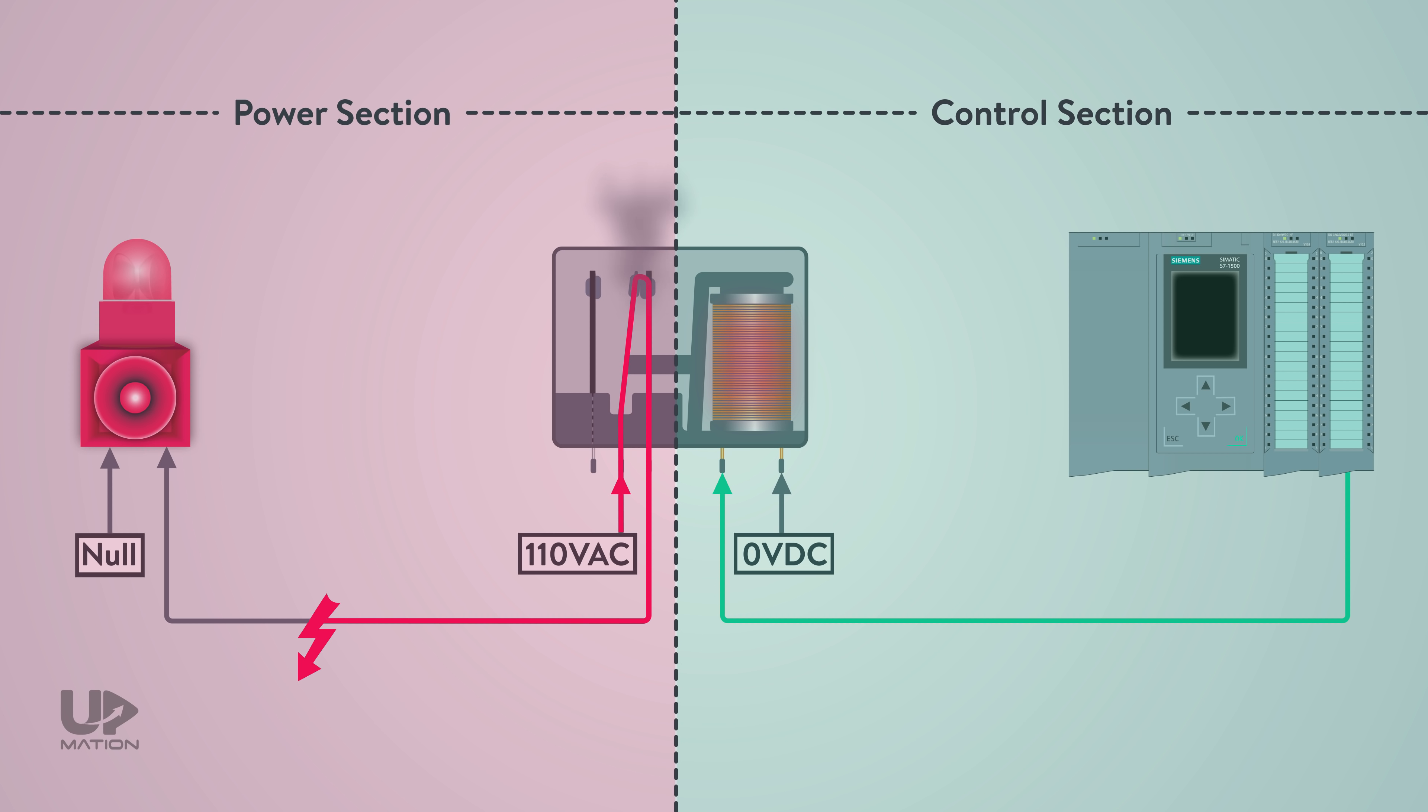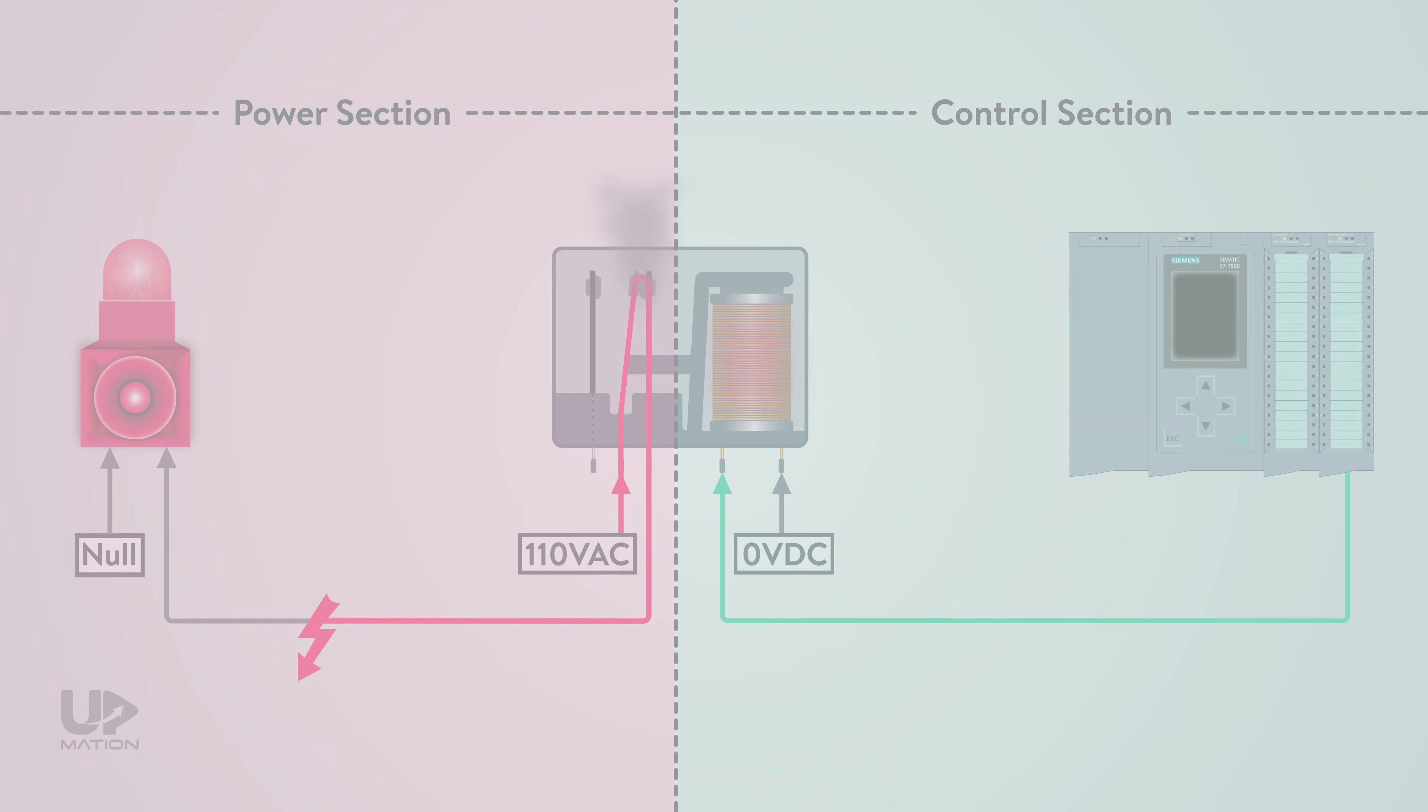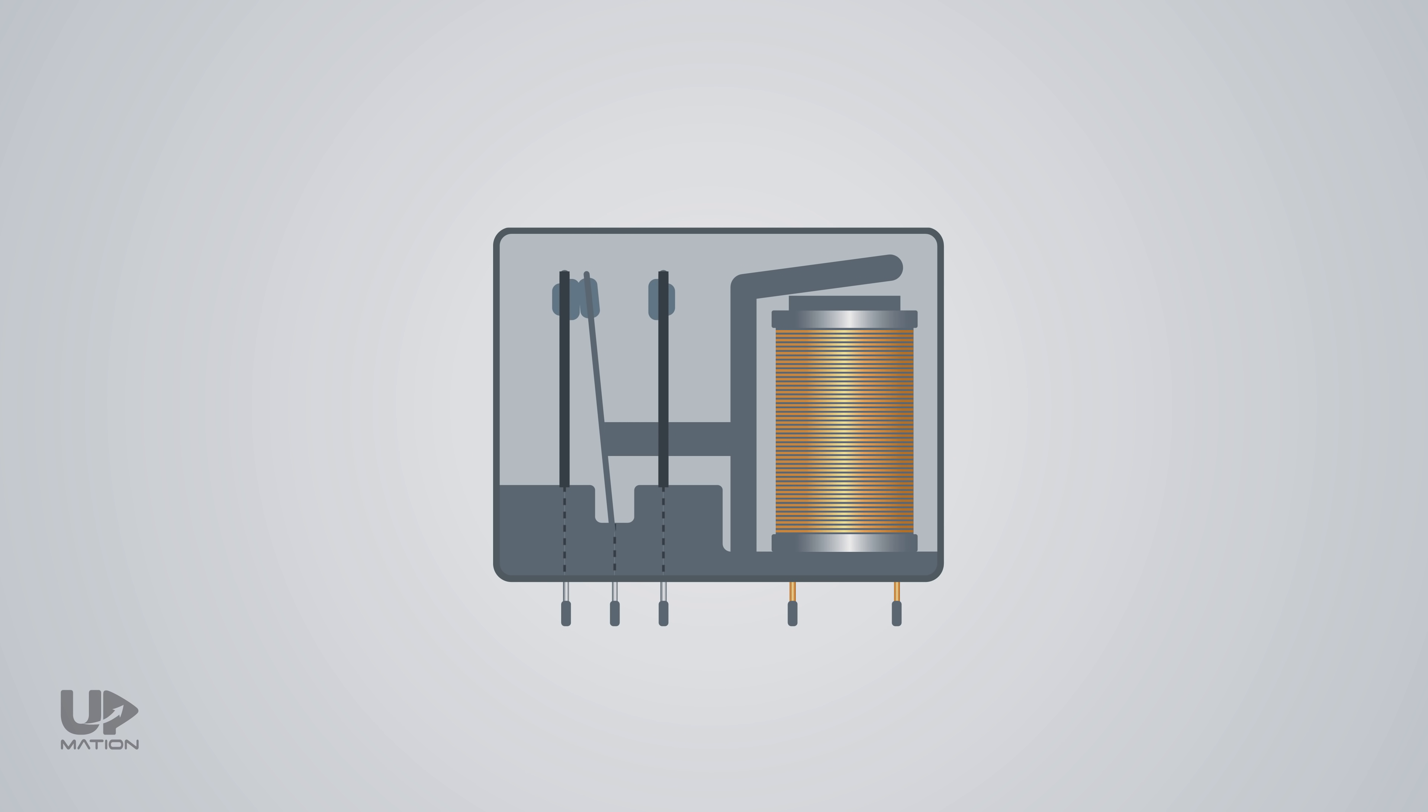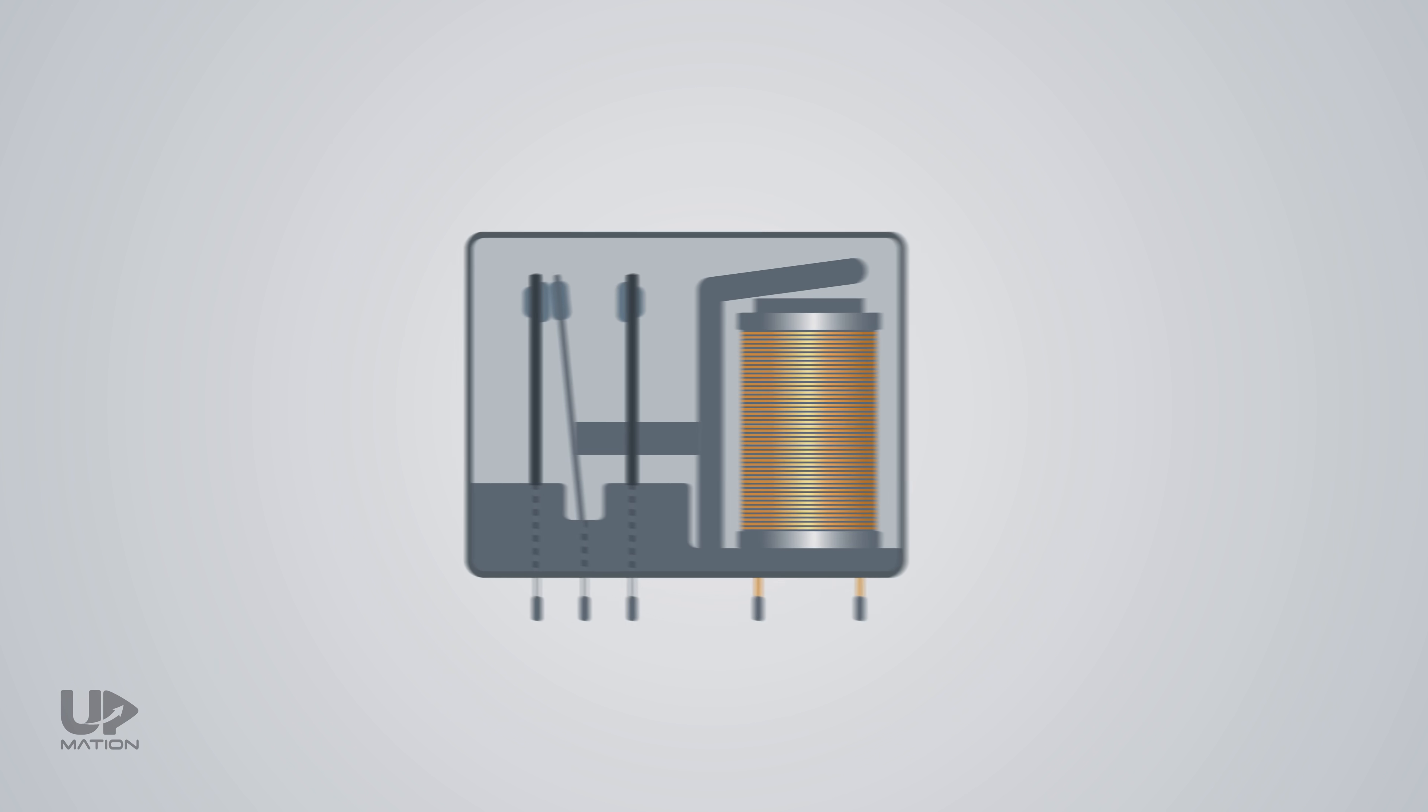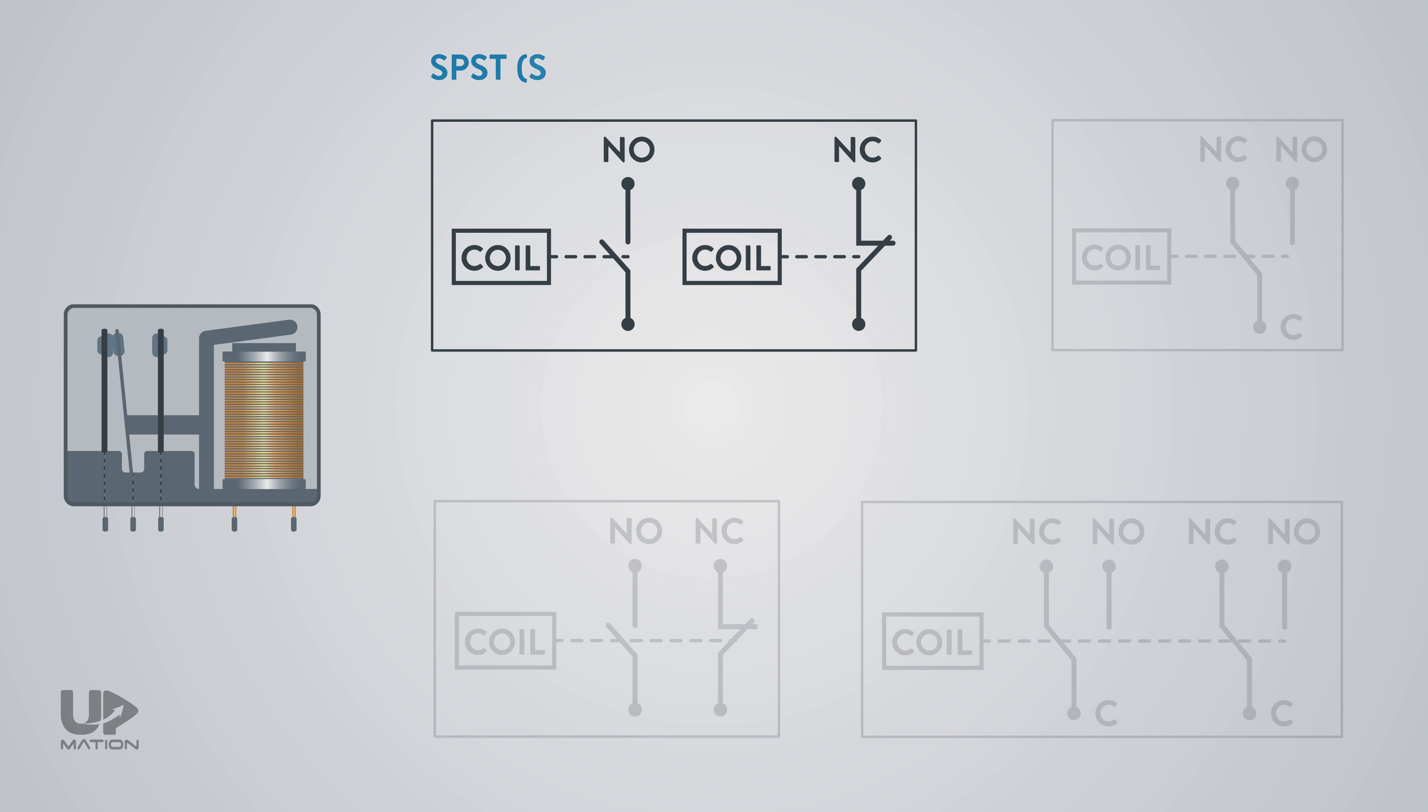Now that you've got your answer, let's see which types the electromechanical relays have. We can classify the electromechanical relays according to the number of their NO and NC contacts. SPST or single pole, single throw. As you see, this could be an SPST NO relay or an SPST NC relay.